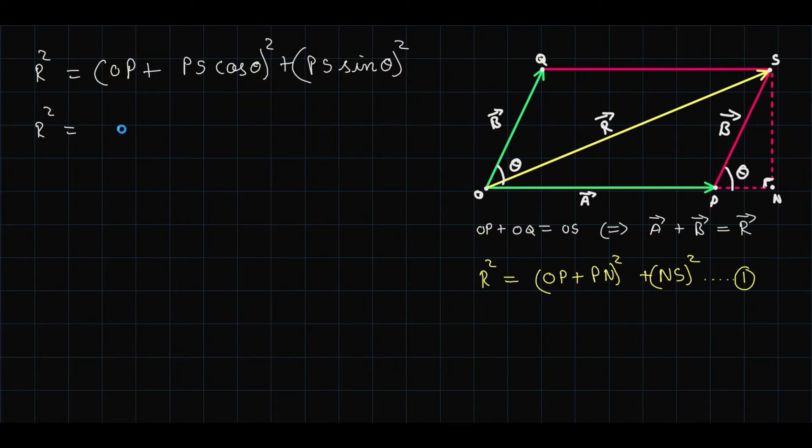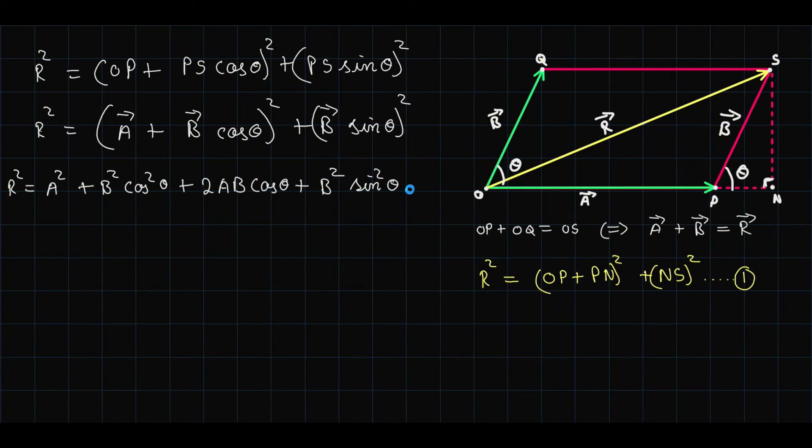We get R squared equals vector A plus vector B cos theta whole squared plus PS which is vector B sine theta whole squared. And on opening up the brackets we get R squared equals A squared plus B squared cos squared theta plus twice AB cos theta and then plus B squared sine squared theta.